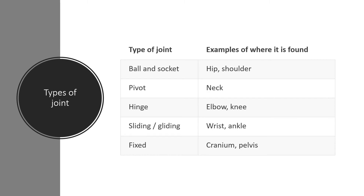Here is a summary table for revision. The ball and socket joint is found in the hips and shoulder; the pivot joint is found in the neck; the hinge joint is at the elbow and knee; the sliding and gliding joint is at the wrist and ankle; and the fixed joint is in the cranium — the skull — and the pelvis.